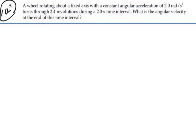Alright, so let's write down what we know. We have an angular acceleration of 2 radians per second squared. We're going to turn through 2.4 revolutions, so that has to be an angle of 2.4 revolutions. Let's immediately convert that to radians.